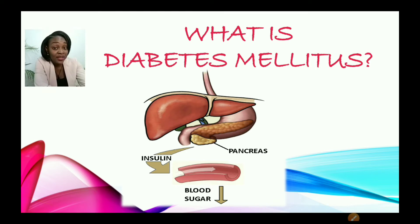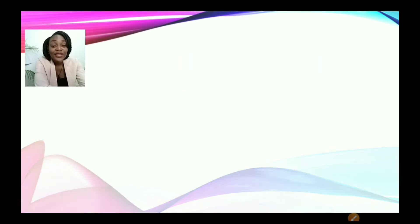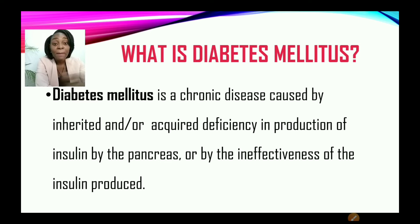Can you put those clues together and form a definition of diabetes mellitus? Alright, let's see how close you are. Diabetes mellitus is a chronic disease caused by inherited and/or acquired deficiency in production of insulin by the pancreas, or by the ineffectiveness of insulin produced.